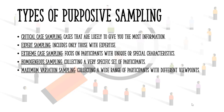On the other hand, maximum variation sampling is collecting a wide range of people with different viewpoints to study a certain phenomenon. This is especially useful for uncovering common themes.